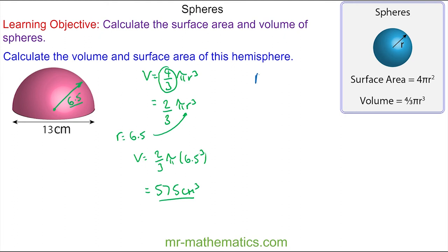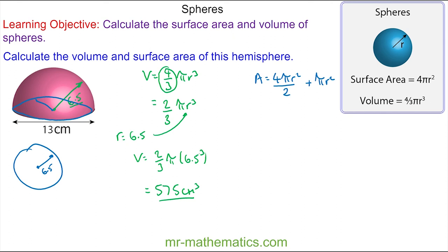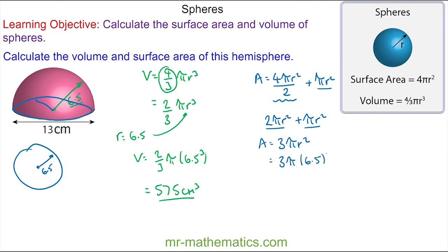For the surface area, we have the formula 4πr² for a full sphere, but again this is half of that, so we divide by 2. We also need to include the base of the hemisphere, which is a circle of radius 6.5, with area πr². Half of 4πr² is 2πr², plus πr² for the base. Collecting like terms, the surface area of the hemisphere is 3πr². With r = 6.5, we have 3π multiplied by 6.5 squared, which gives approximately 398 centimeters squared to three significant figures.